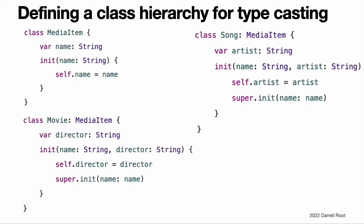Defining a Class Hierarchy for Typecasting. You can use typecasting with a hierarchy of classes and subclasses to check the type of a particular class instance and to cast that instance to another class within the same hierarchy. The three code snippets here define a hierarchy of classes and an array containing instances of those classes for use in an example of typecasting.